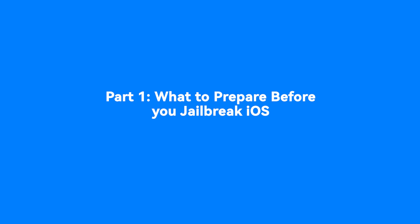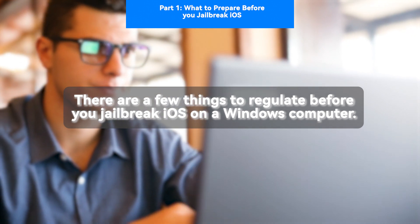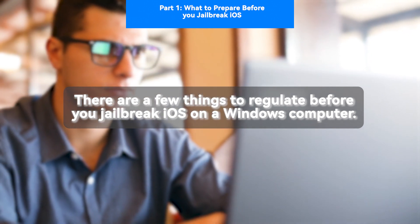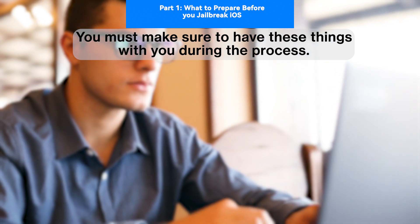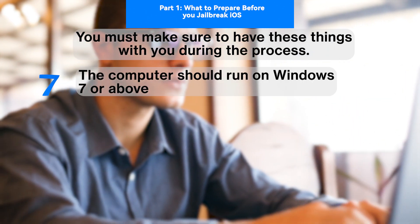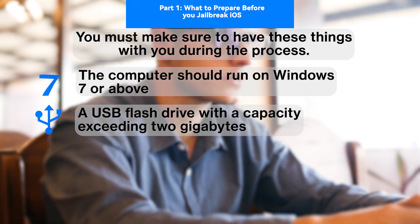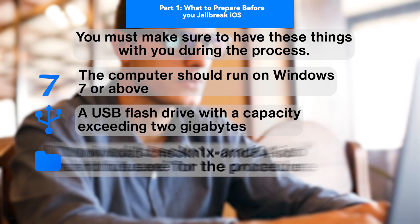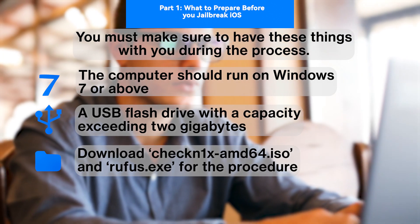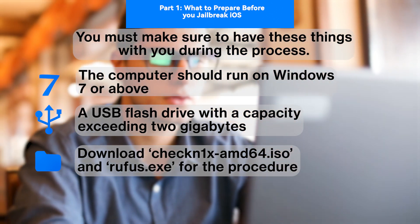What to prepare before you jailbreak iOS. There are a few things to regulate before you jailbreak iOS on a Windows computer. You must make sure to have these things with you during the process: the computer should run on Windows 7 or above, a USB flash drive with a capacity exceeding 2GB, and download CheckN1X AMD64 ISO and Rufus for the procedure.